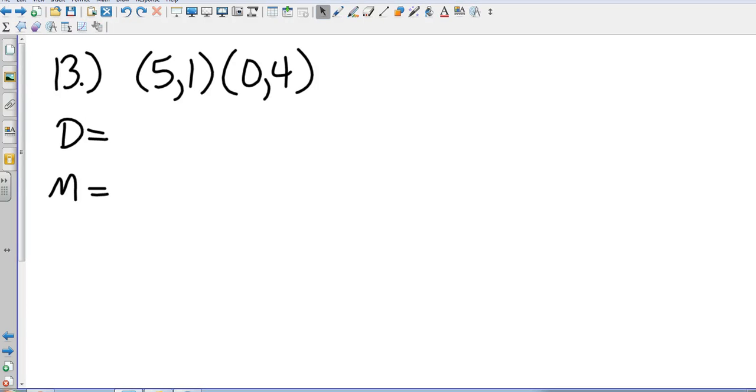All right. Now, I'm going to finish up the review today with just a few questions, putting a lot of emphasis on the Pythagorean theorem in the final parts of the test. Let's start at number 13. D and M are going to stand for distance and midpoint.